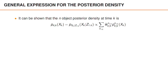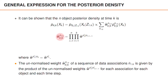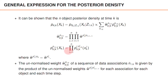Typically in n-object tracking, the prior hypotheses correspond to data associations. It can be shown that the n-object posterior density at time step k is proportional to a sum over data association sequences from time one to time k, where each mixture component is conditioned on this data association sequence. The unnormalized weight of a sequence of data associations is given by the product of the unnormalized weights for each association, each object, and each time step. Conditioned on each data association sequence, the posterior n-object density is an independent density, where for each object we have the posterior conditioned on the data association for that particular object.